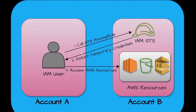The procedure is as follows: the IAM user will call an STS assume role to the STS service in Account B. The STS service will return temporary credentials to the user, and using those temporary credentials the IAM user will access the mentioned AWS resources in Account B. The first step is to create the STS assume role in Account B.